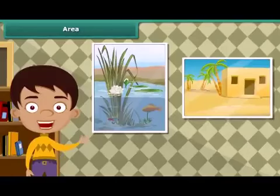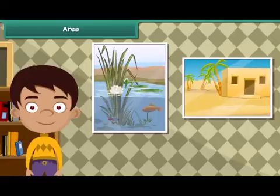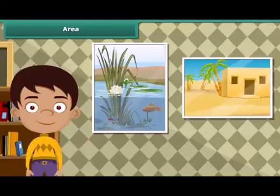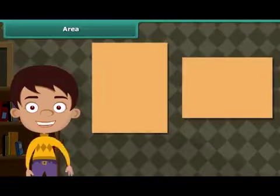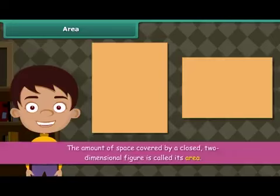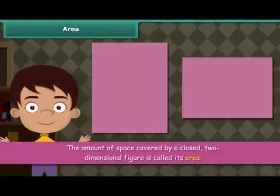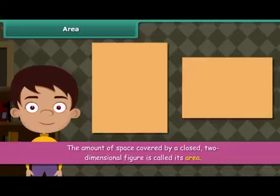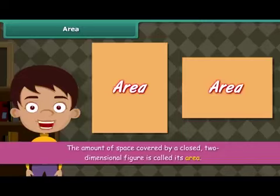Take two paintings of different sizes and compare them. The amount of space covered by the two paintings will be different, because the lengths and breadths of the two paintings are different. The amount of space covered by a closed two-dimensional figure is called its area. The area of one such figure can be different from the area of another.